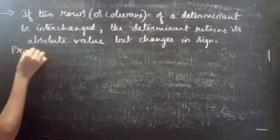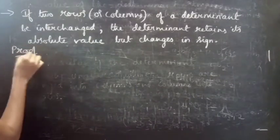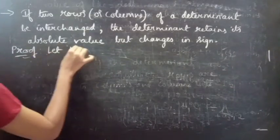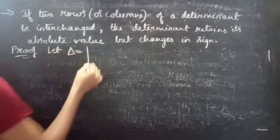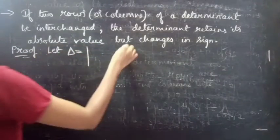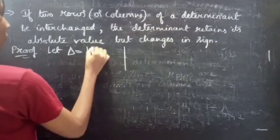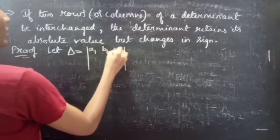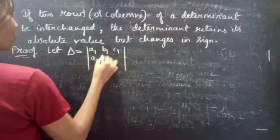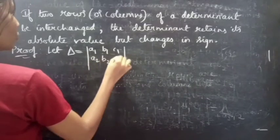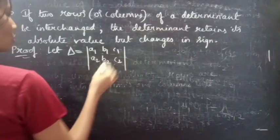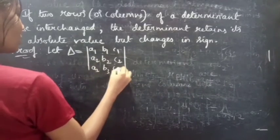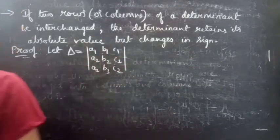Proof. Let delta equal to the determinant of a1, b1, c1, a2, b2, c2, a3, b3, c3.